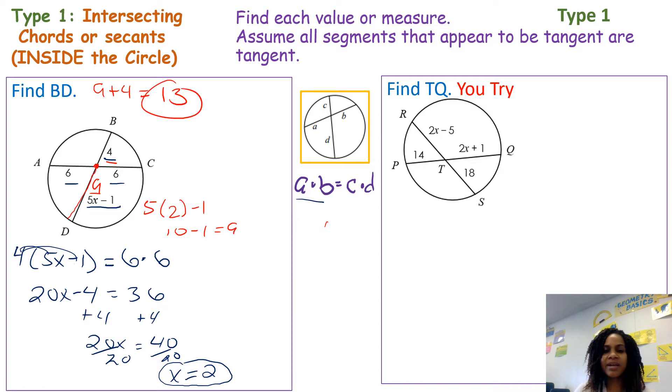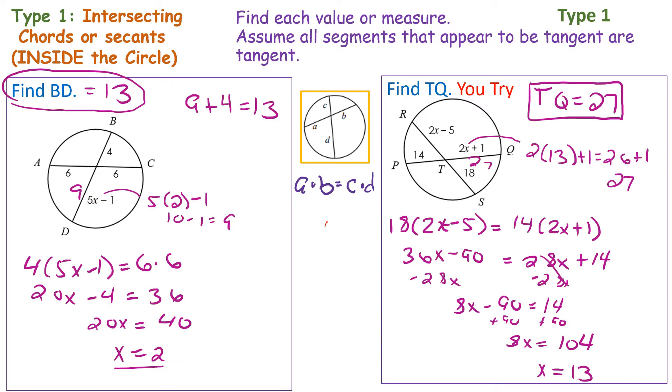This next example here, find TQ. I want you to go ahead and pause the video and try this problem on your own. You should have gotten that TQ equals 27. If you did not get it correct, go ahead and pause the video and analyze my work a little bit more.